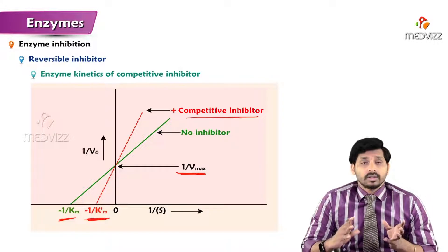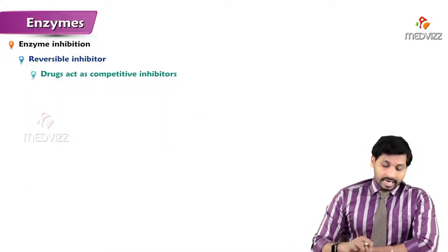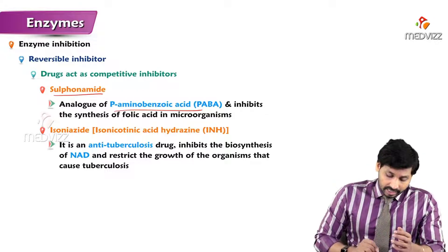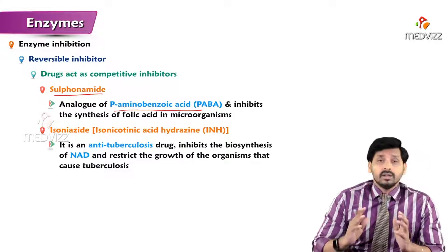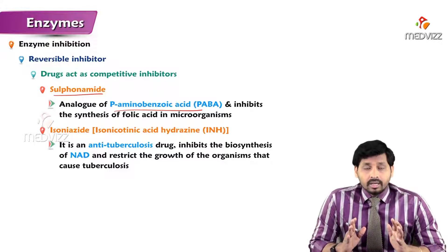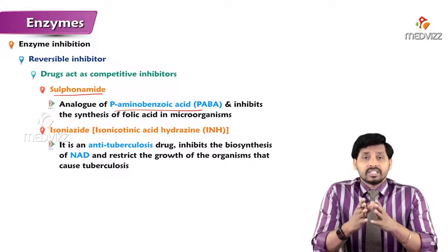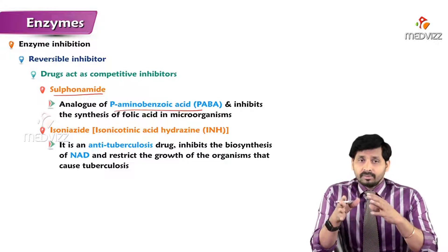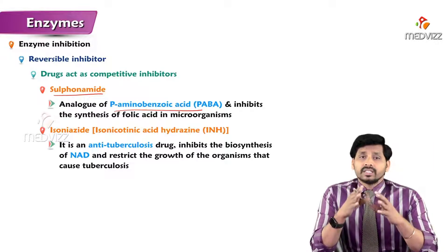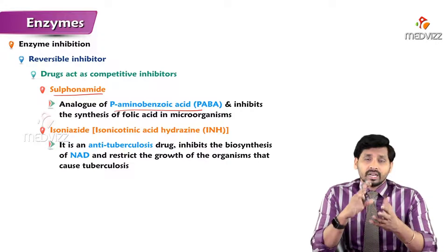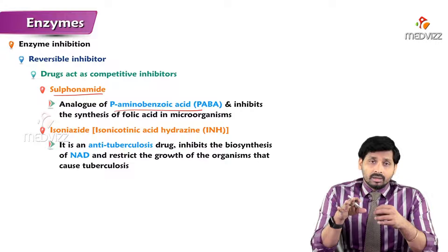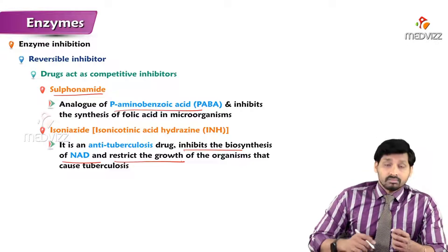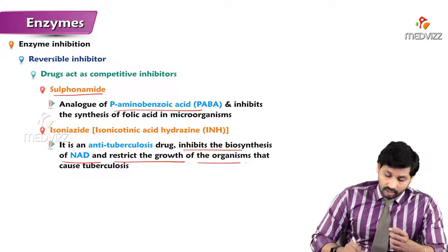Drugs that act as competitive inhibitors include: sulfonamide, an analog of para-aminobenzoic acid used in cancer treatment — para-aminobenzoic acid is a structural part of folic acid, which is essential for cell synthesis, so sulfonamide blocks folic acid synthesis and controls uncontrolled cell growth. Isoniazid is an anti-tuberculosis drug which inhibits the biosynthesis of NAD — without NAD there is no energy, no electron transport chain, and the organism cannot grow.